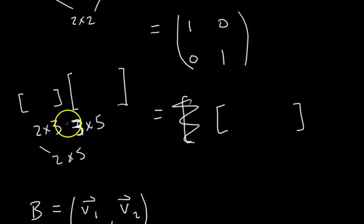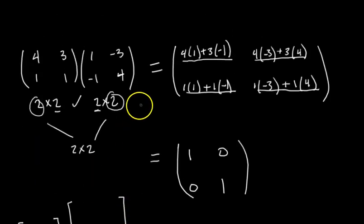Those are the two methods. Remember, it's only defined when the inner dimensions are the same, and then the outer dimensions give you the dimension of your product matrix. And if you have one matrix and you multiply it by its inverse, then you get the identity matrix. Those are the points I wanted to cover in this video. I'll see you in the next one.